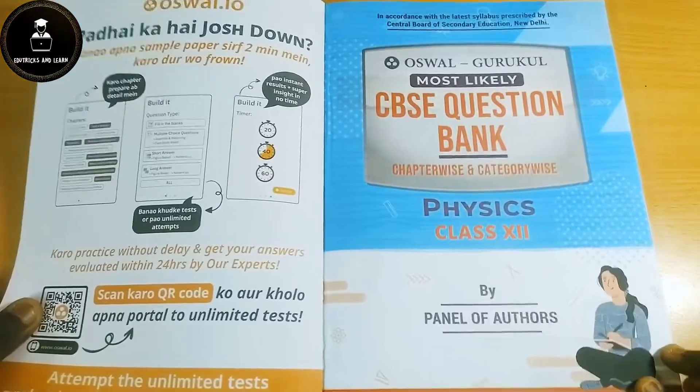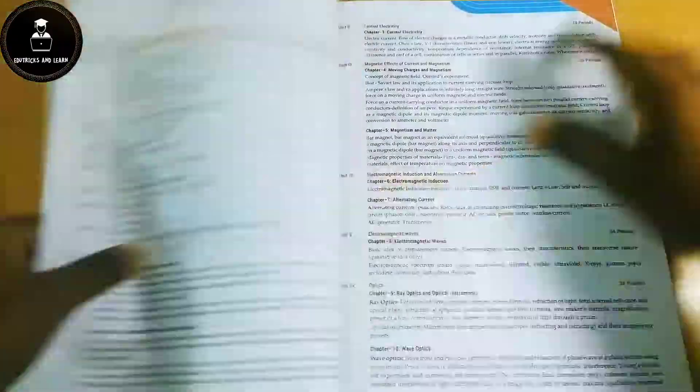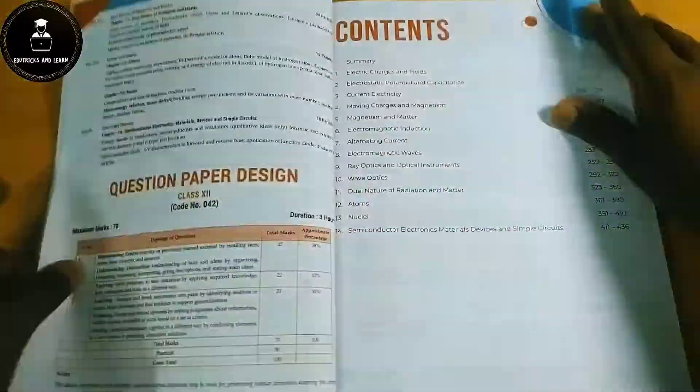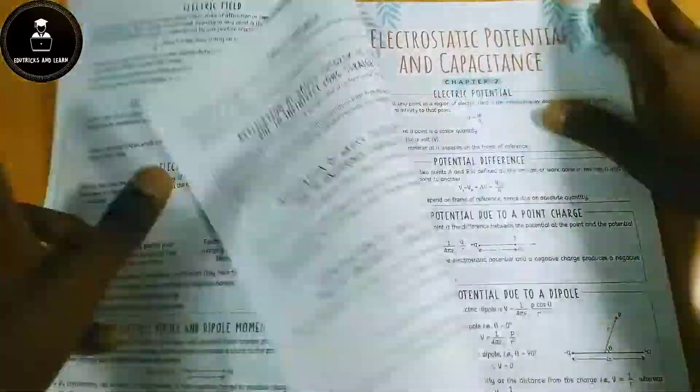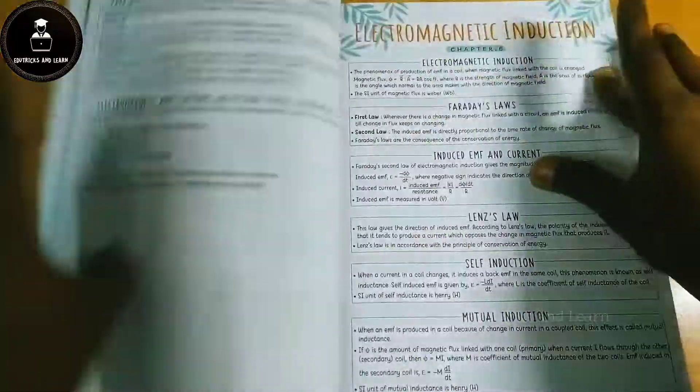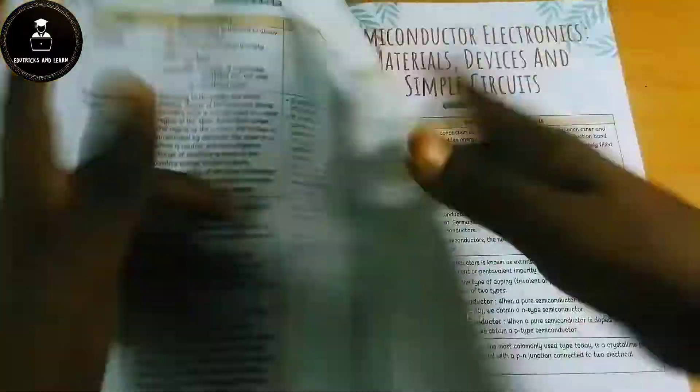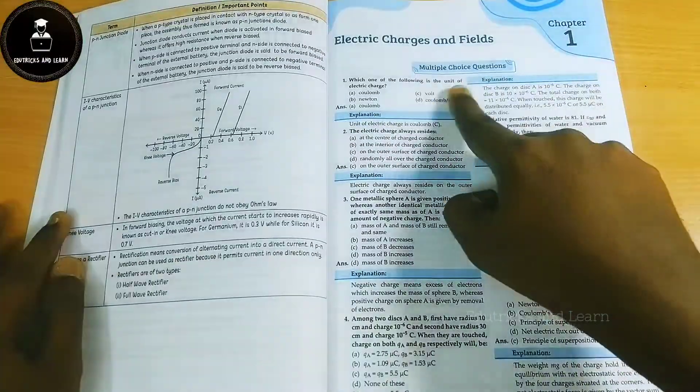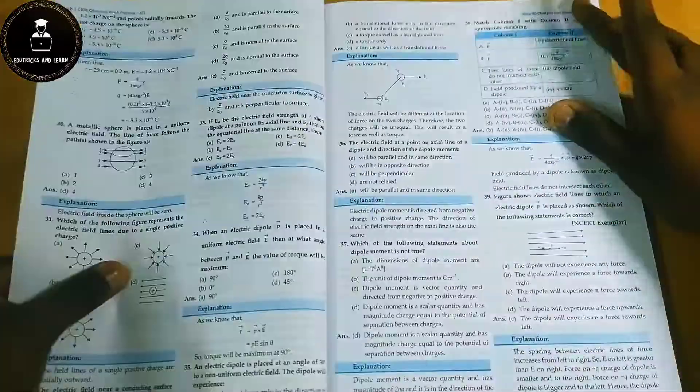This is Oswal Gurukul Most Likely CBSE Question Bank for Physics. The rate of the book is Rupees 550. First they've given the preface, syllabus content, and the question paper design. After that they've given the first initial pages of notes, complete notes in a short form.